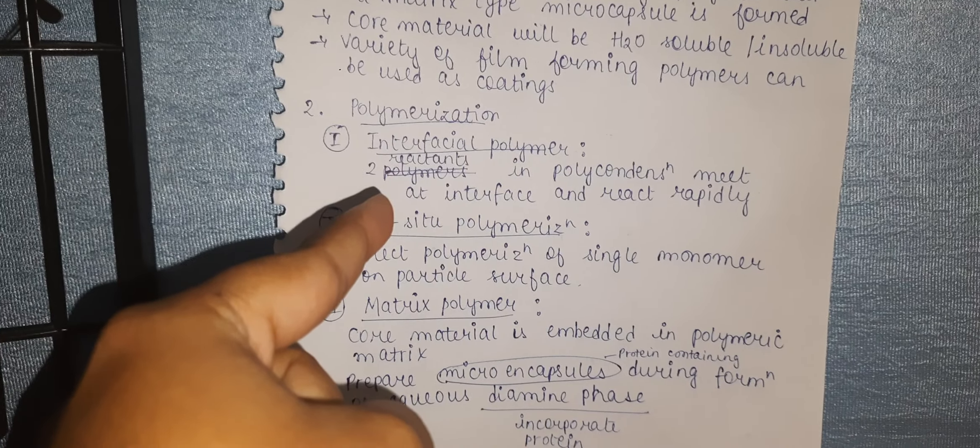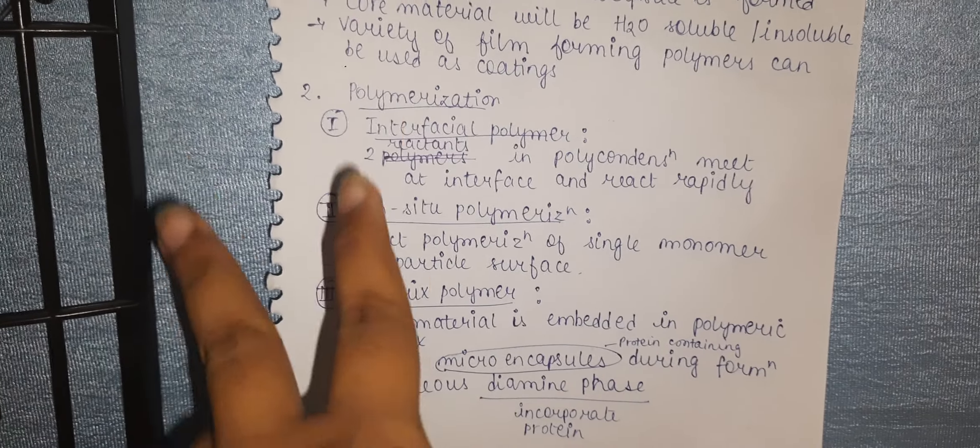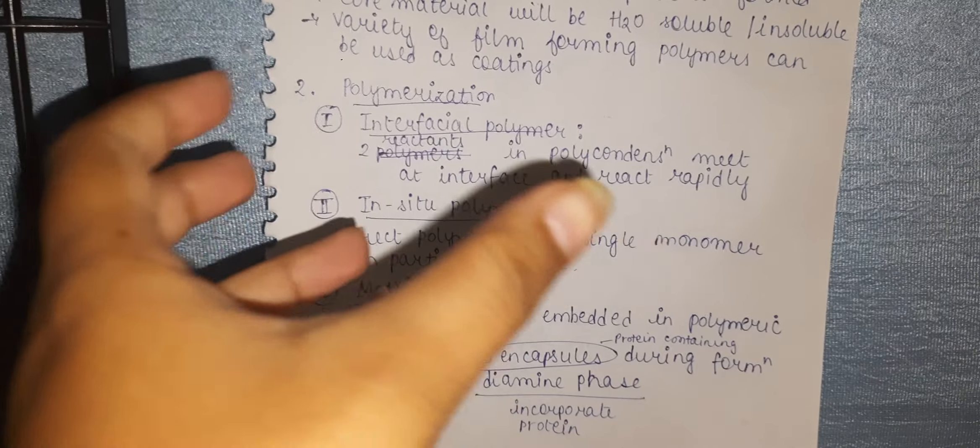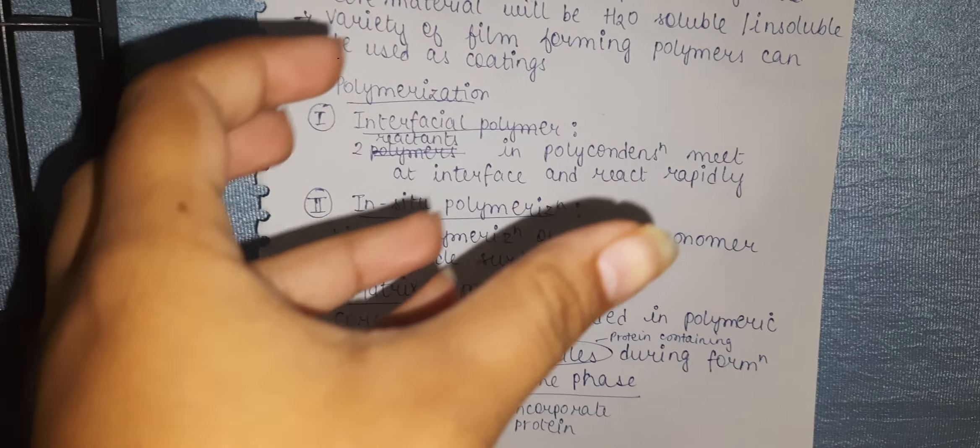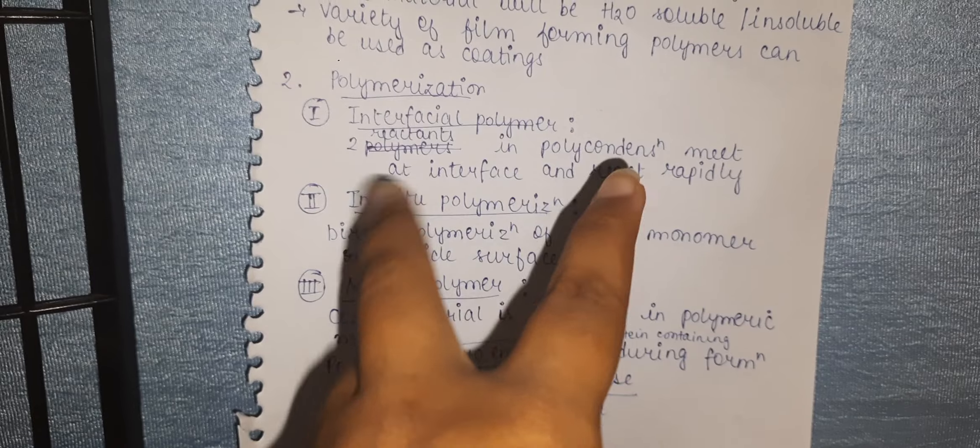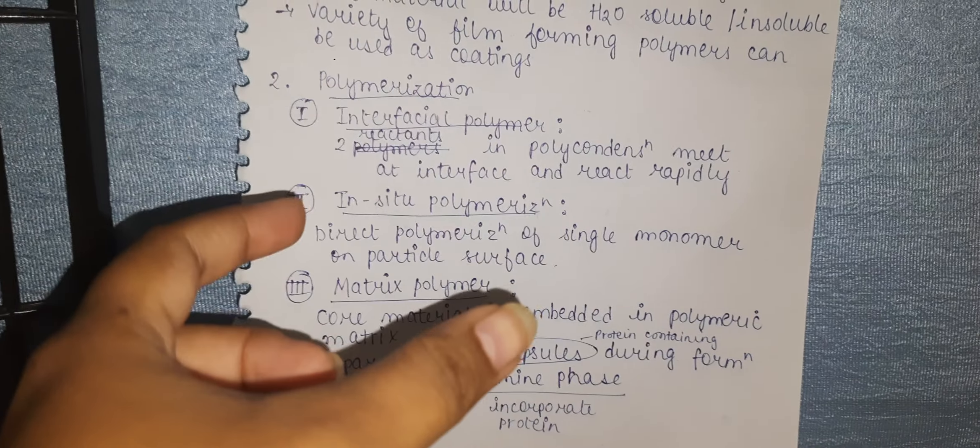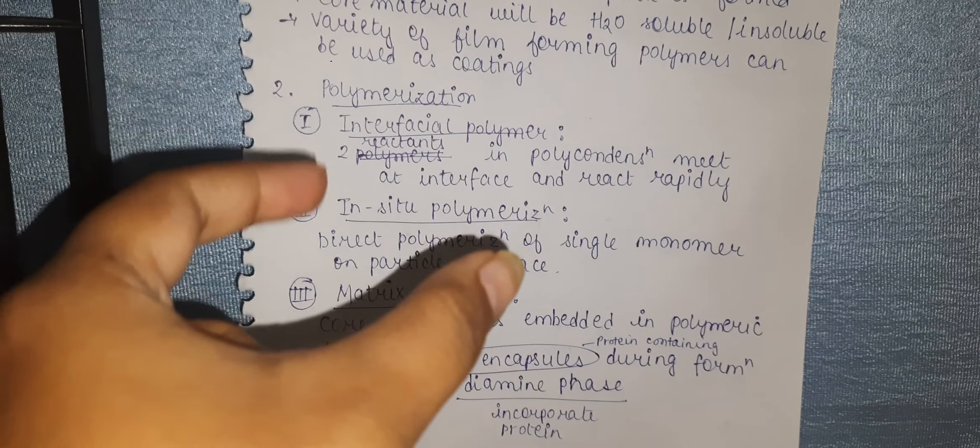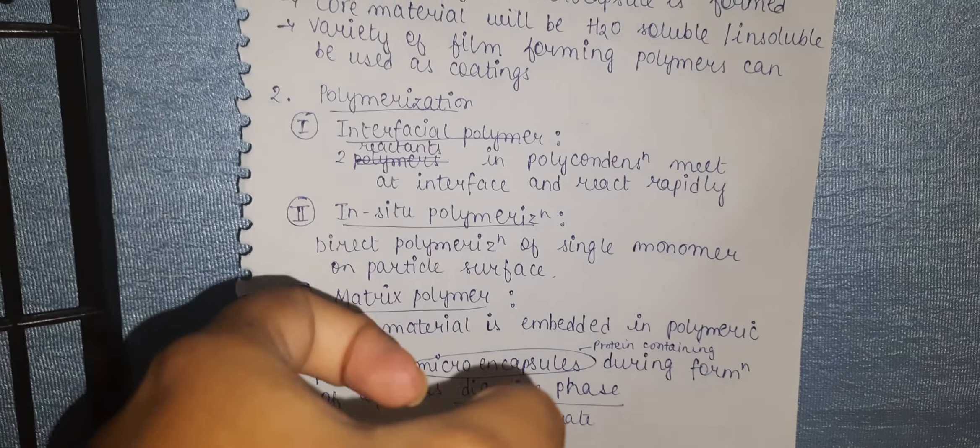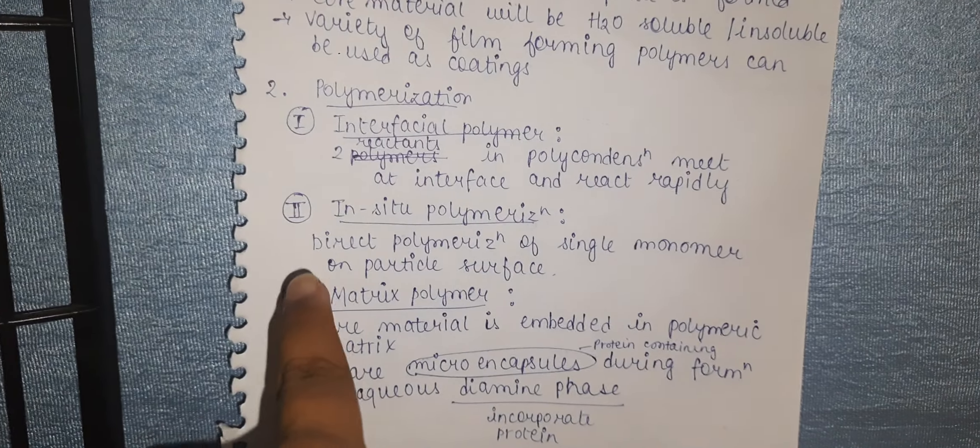In interfacial polymerization, there are two reactants that undergo polycondensation. They meet at an interface and react rapidly with each other at that point.